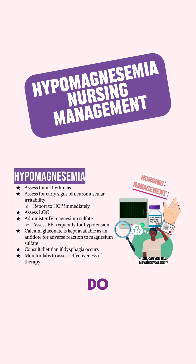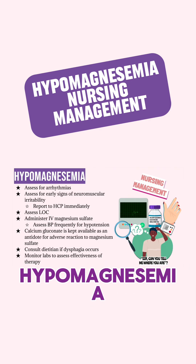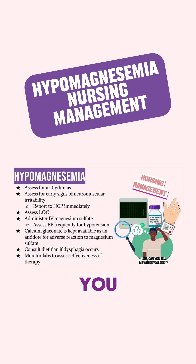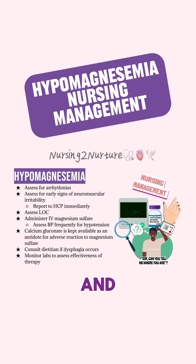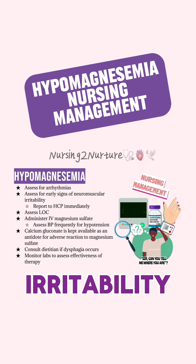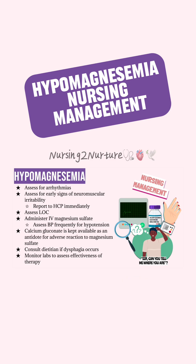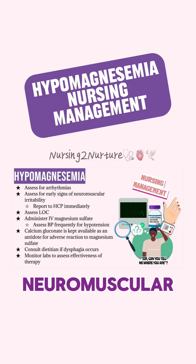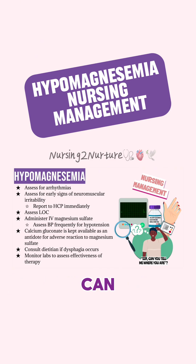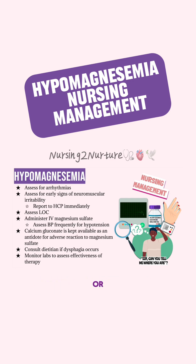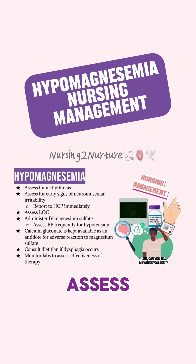Let's talk about some things you would do as the nurse to care for the patient with hypomagnesemia. You should first assess for arrhythmias and early signs of neuromuscular irritability. Assessing for neuromuscular irritability can be done by testing for a positive Chvostek's or Trousseau sign. You're also going to want to assess your patient's level of cognition.